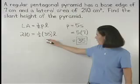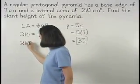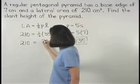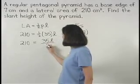Simplifying on the right side, we have 210 equals 35 l over 2.